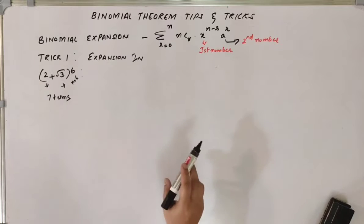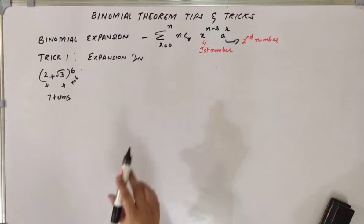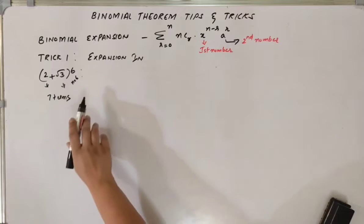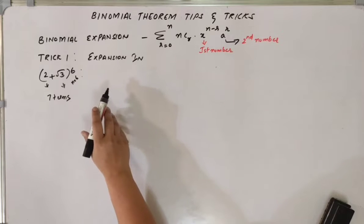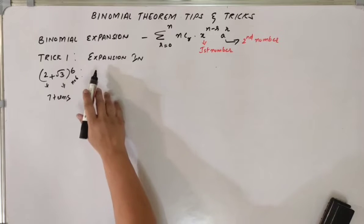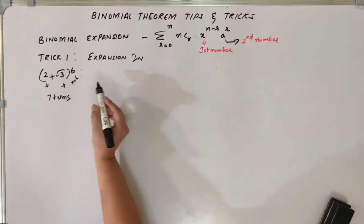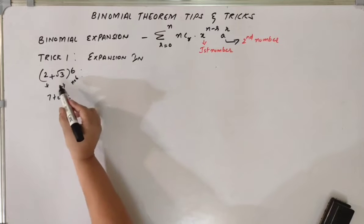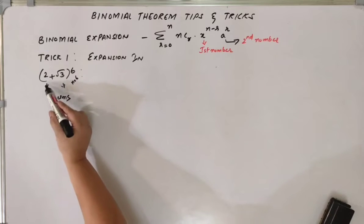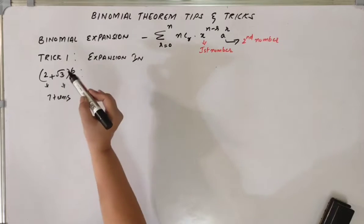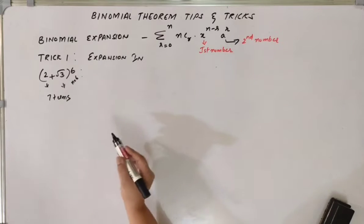Let us go through tips and tricks for binomial theorem. There are multiple tricks. Trick number 1 is to get an easy and quick way of binomial expansion. Let's take this example: 2 plus root 3. The first number is 2, the second number is root 3, and the power is 6, that is n is 6.